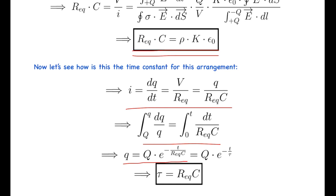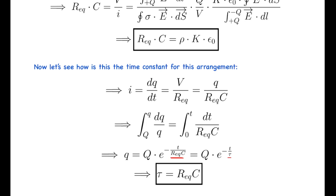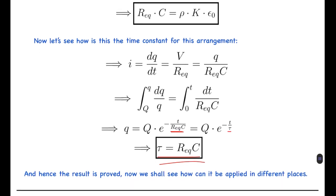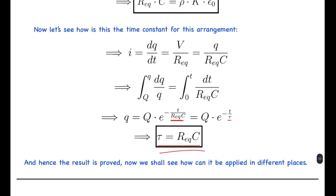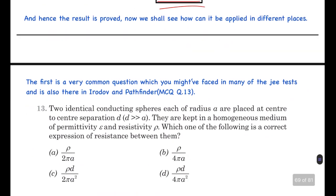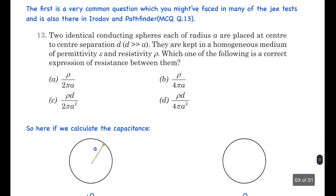From this we can see that the time constant τ = R_eq × C. This completes the proof: the time constant in any such medium equals ρkε₀. The result is proved. Now let's see how it can be applied in different problems. One very common example, which appears in JEE tests, weekly tests, and also in Irodov and Pathfinder, is the question number 13 from the chapter on electric current.